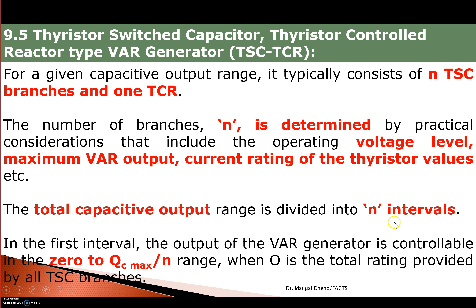The total capacity output range is divided into N intervals. In the first interval, the output of the VAR generator is controllable from 0 to QC_max divided by N. For example, if total KVAR is 40 and N is 4, each interval is 10. So the first TSC bank supplies 10, the second from 10 to 20, the third from 20 to 30, and the fourth from 30 to 40. From 0 to QC_max over N, the range will be variable power.